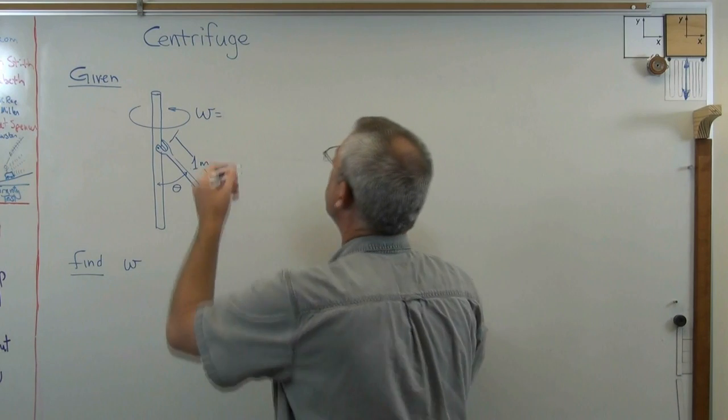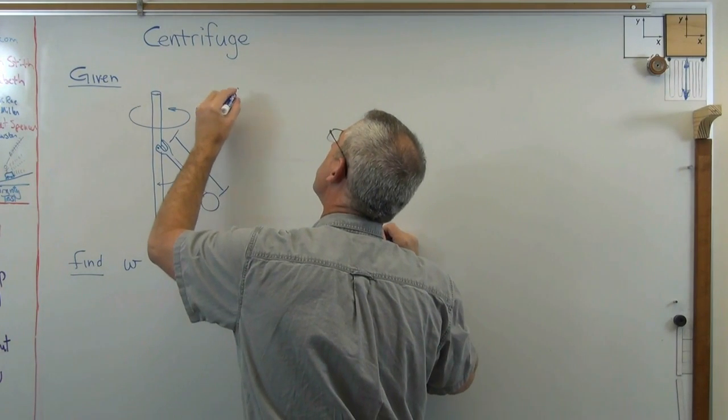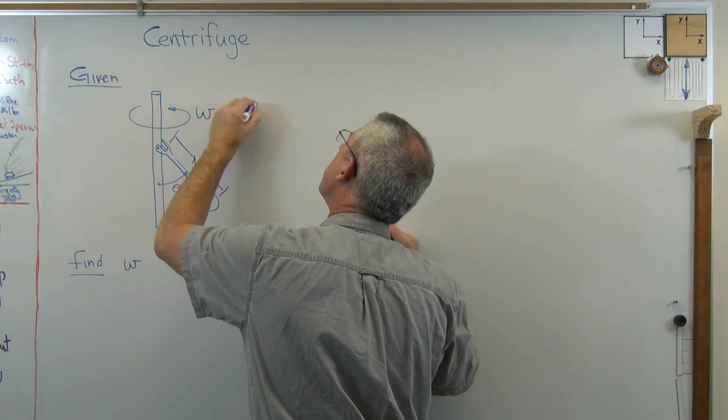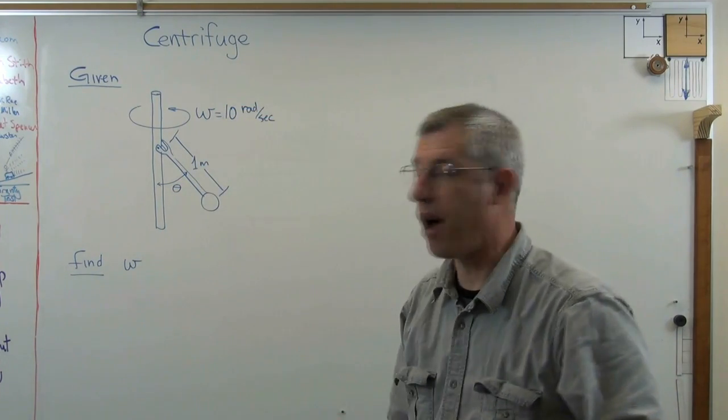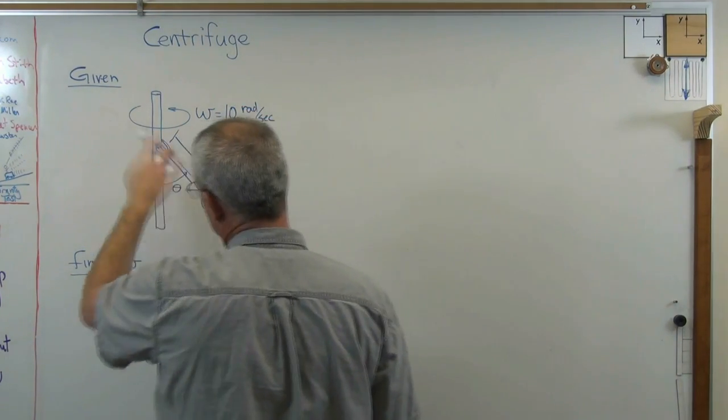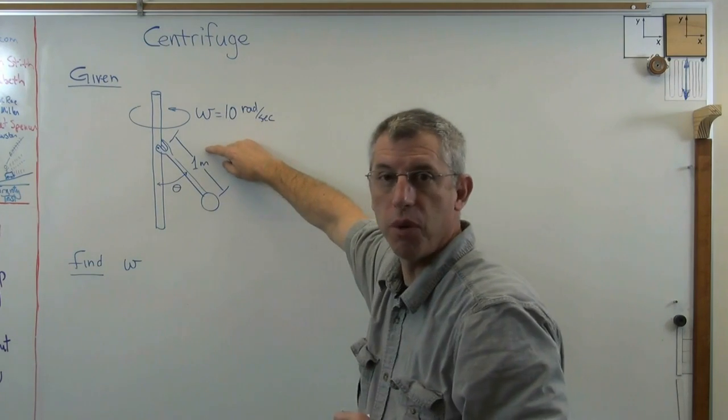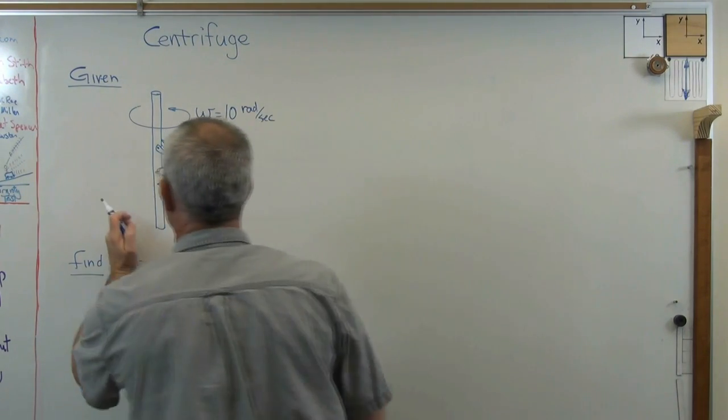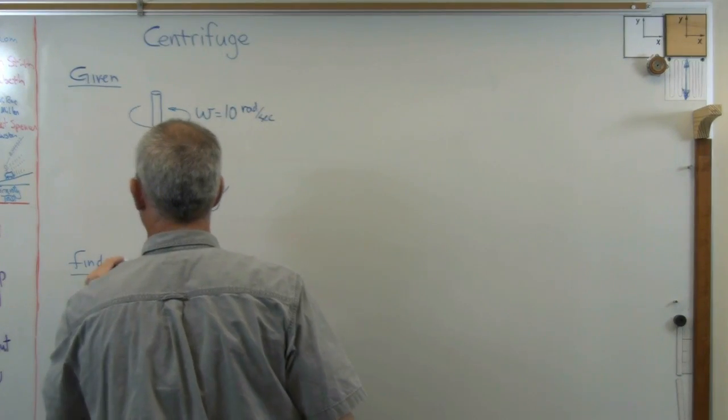So, I've got one of these. Let's assume that the rotational speed is 10 radians per second, which is really humming. That's a lot, for something this big anyway. The arm is one meter. And we're going to find theta.